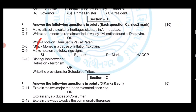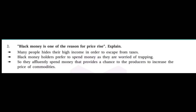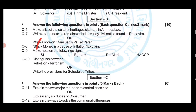Question number eight: Black money is a cause of inflation — explain. The explanation will be on your screen. Question number nine: Make a note on the following signs — ISI mark, EG mark, Pole mark, and HACCP mark. You have to explain these terminologies. The explanation of these terminologies is on your screen, please look carefully.